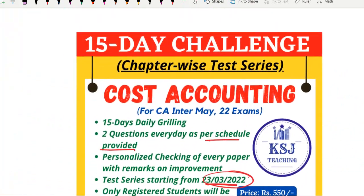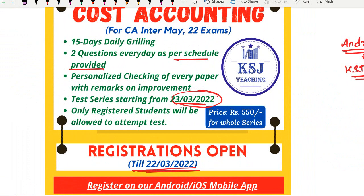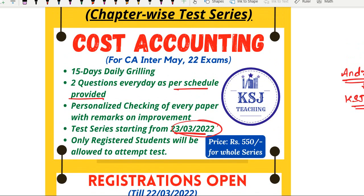This is the procedure for Android and iOS. Go to the store section at the bottom of the app. There you will find the cost accounting 15-day challenge as well as other amazing courses like the costing fast track course, costing ICISM courses, and costing all-rounder courses. For those who wish to register for the cost accounting fast track course, please register as soon as possible because book delivery takes 6 to 7 working days, and time is limited for the May 2022 exams.